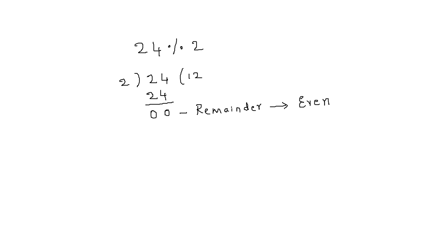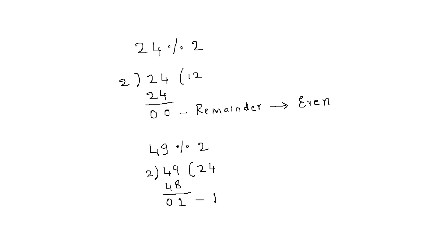Similarly, let's consider 49 modulus 2. We know 49 is odd, but we want Python to confirm the same. Dividing 49 by 2 gives a quotient of 24 and a remainder of 1. Since the remainder is not 0, we conclude that the given number is an odd number. This is the logic behind the program.